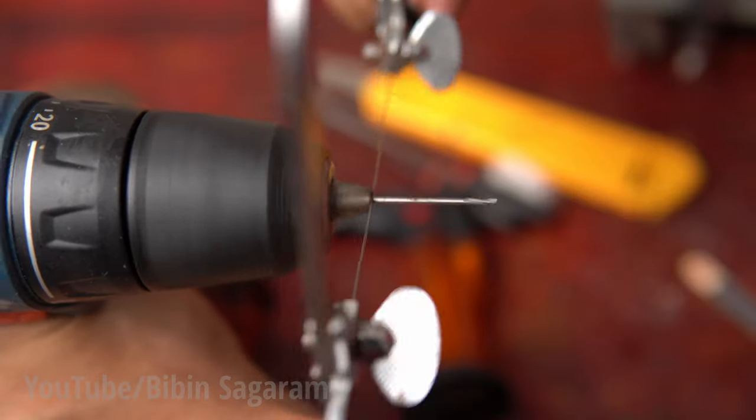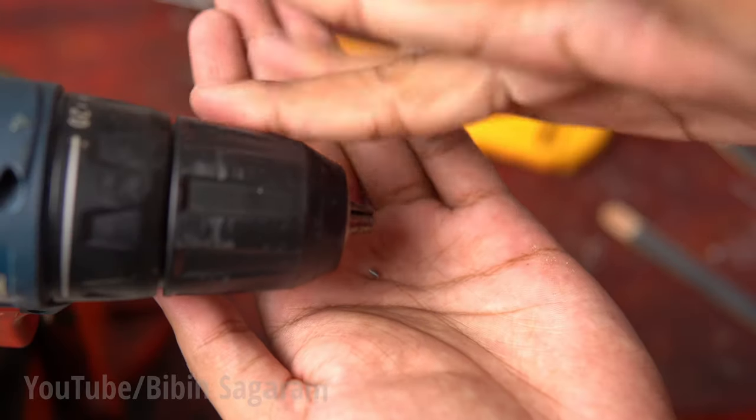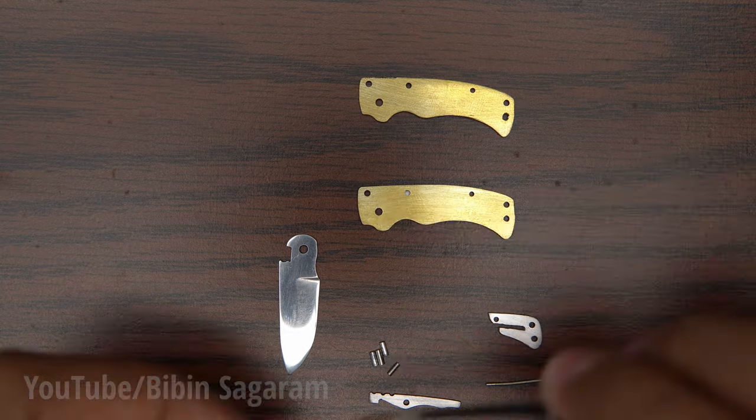Now the only thing left is to make the pins to hold everything together. Pins are made from different diameter drill bits. We have all the parts ready and it's time to assemble the knife.